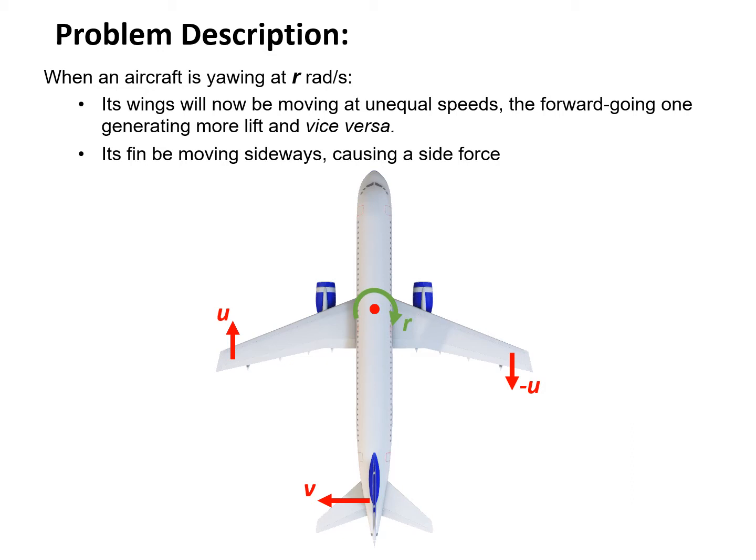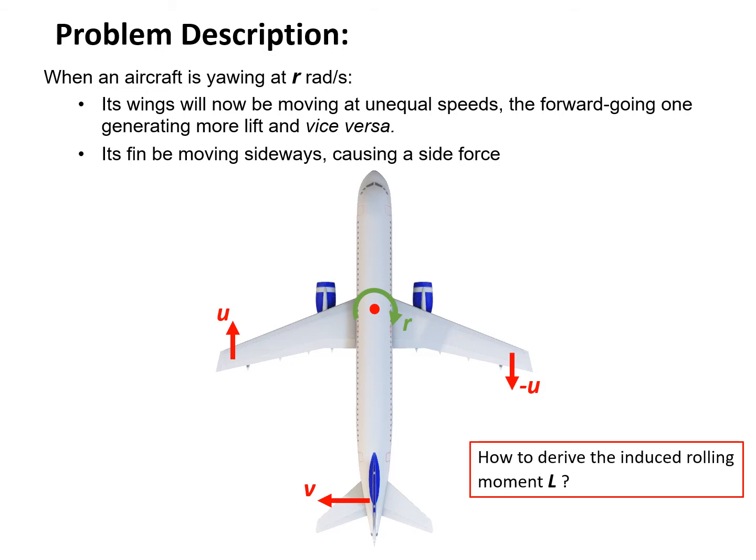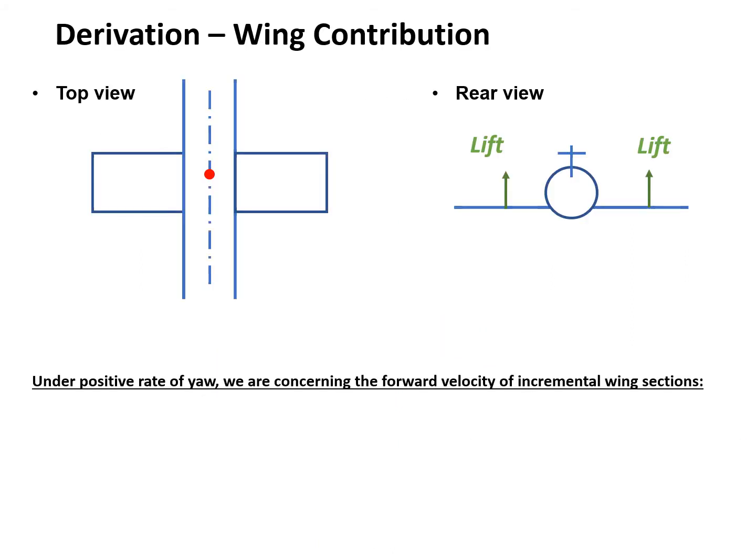In order to derive the rolling moment, according to the analysis here, we will have two contributions: one contribution from the wing and the other contribution from the fin. First, let's see the wing contribution.